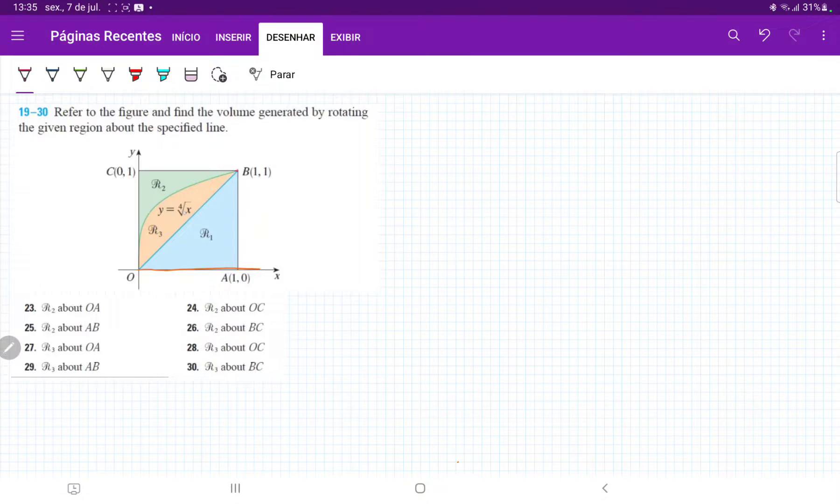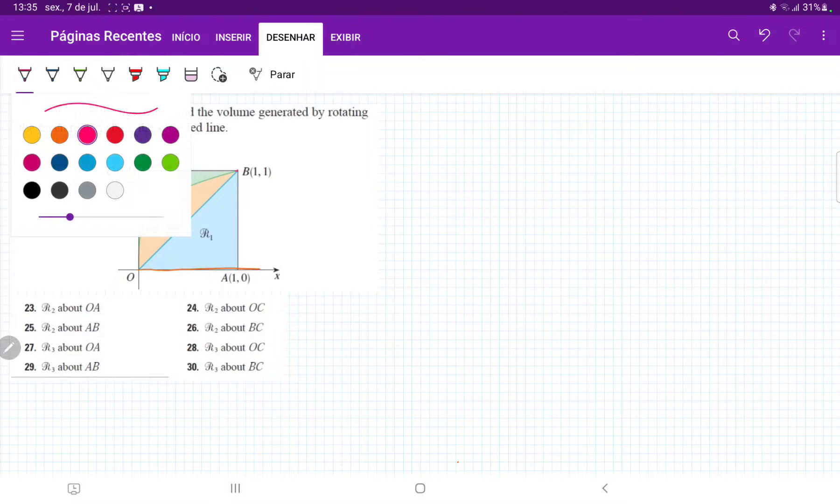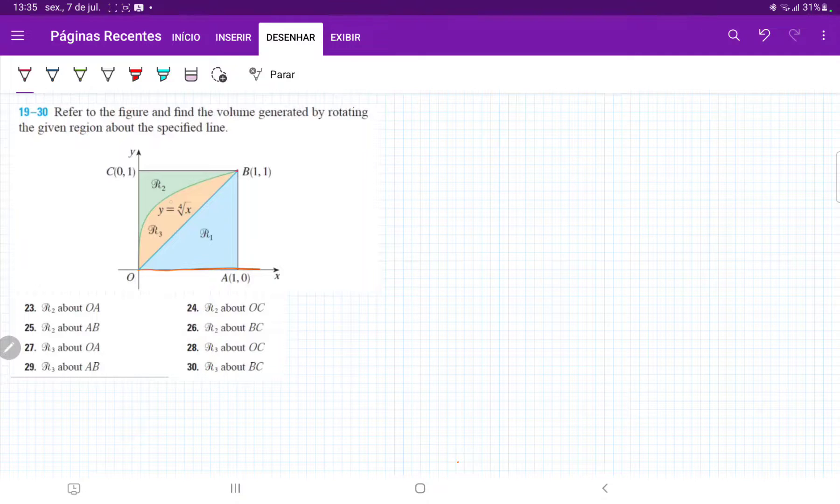And then when we revolve it, we are going to end up with these disks, where the smaller part of the disk is going to touch this curve here, that's the fourth root of x, and then the bigger part of the disk will touch this line here, which is actually y equals 1, right? That's the bigger, the upper boundary of it.